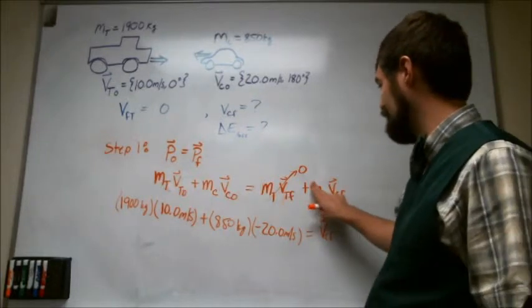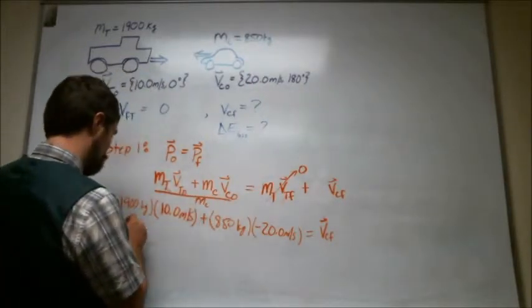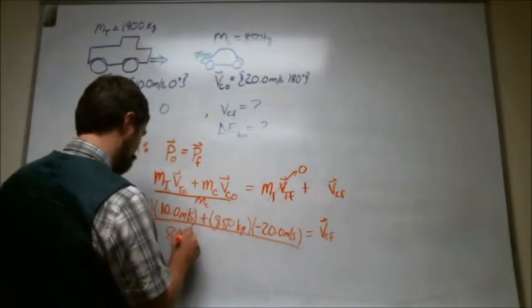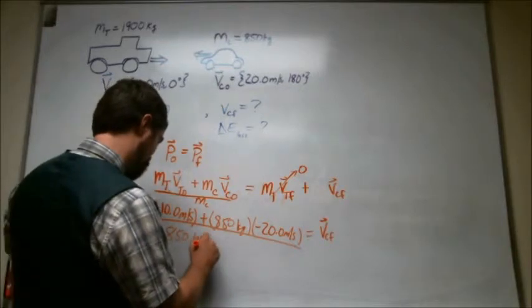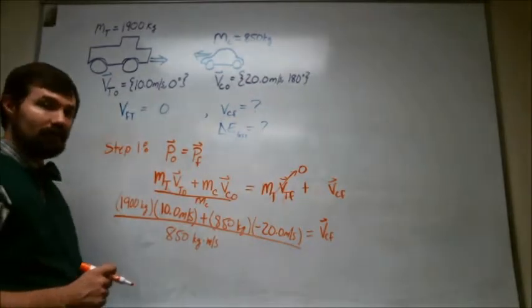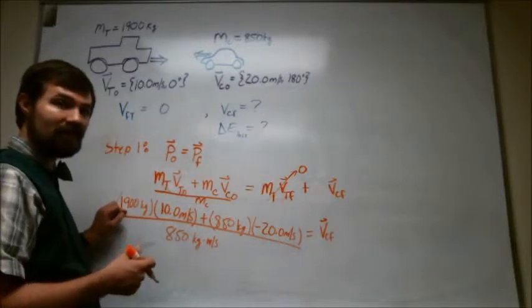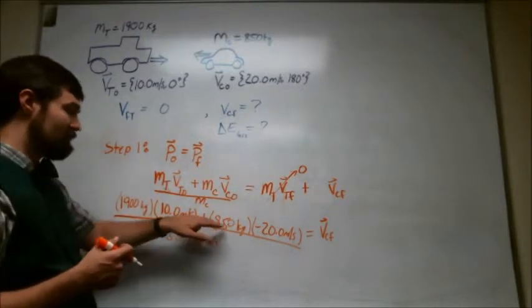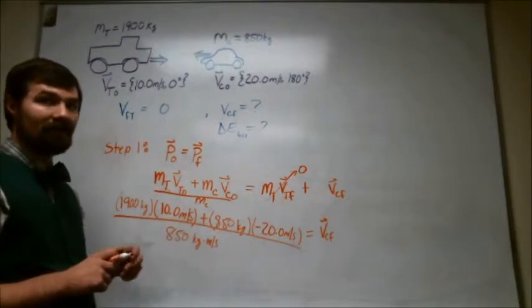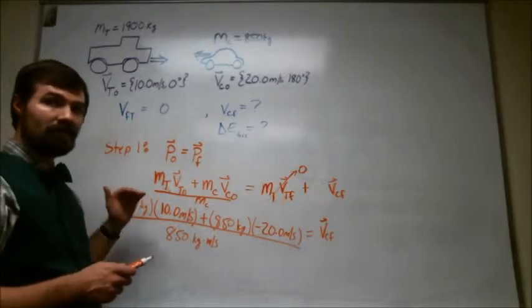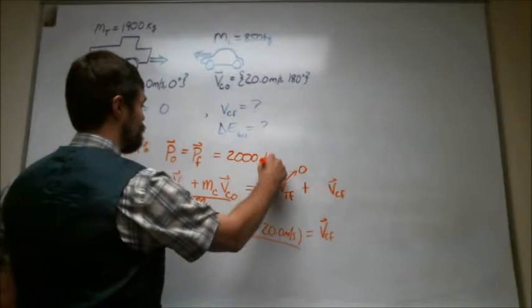So I'm actually going to go ahead and divide out that mass of the car from both sides. So here comes the mass of the car, and here's the mass of the car, 850 kilograms. So this product here is 10 times 1900 means we've got 19,000 kilogram meters per second in the positive direction. This one, negative 20 times 850 means we have 17,000 kilogram meters per second in the negative direction. So the total momentum is 2000 kilogram meters per second.